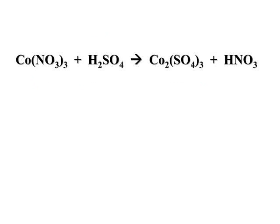Let's continue balancing. We have cobalt nitrate reacting with sulfuric acid to make cobalt 3 sulfate and nitric acid. Our formulas are correctly written. We'll start with our metal. We've got one cobalt on this side and two cobalts here, so putting a two in front of the cobalt 3 nitrate balances the cobalts.